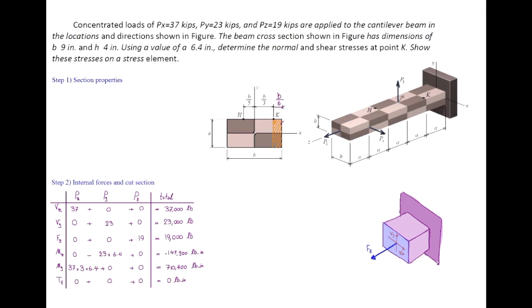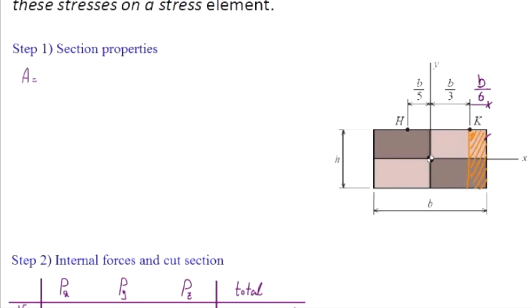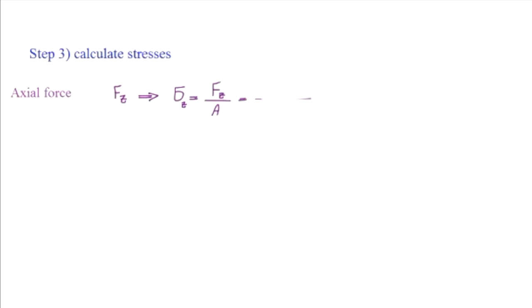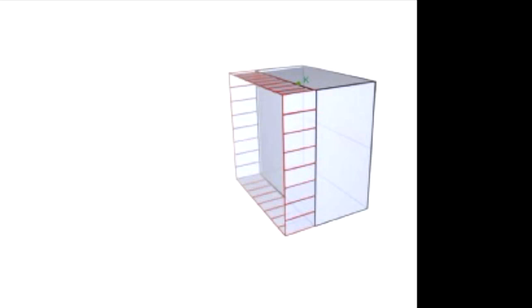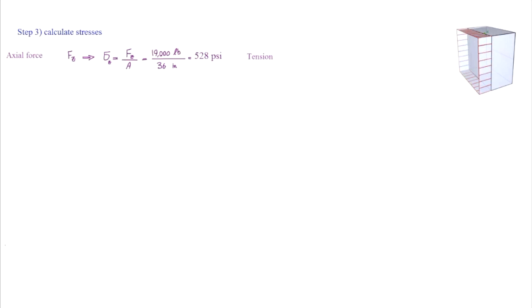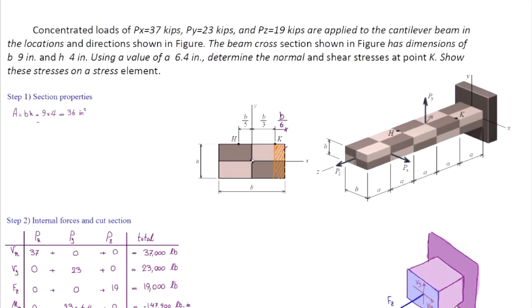The second step would be determining stresses caused by each of these forces individually at the point of interest, at point K. The stress caused by the axial force is F over A, and the area is the area of this cut section — 4 times 9, which is 36 square inches. That gives 528 psi positive, because that would be tension. This stress is uniform everywhere in that cut section. Now we want to talk about stresses caused by the bending moment and stresses caused by the shear forces. For the bending moment — say, moment about x — we need to know the moment of inertia.